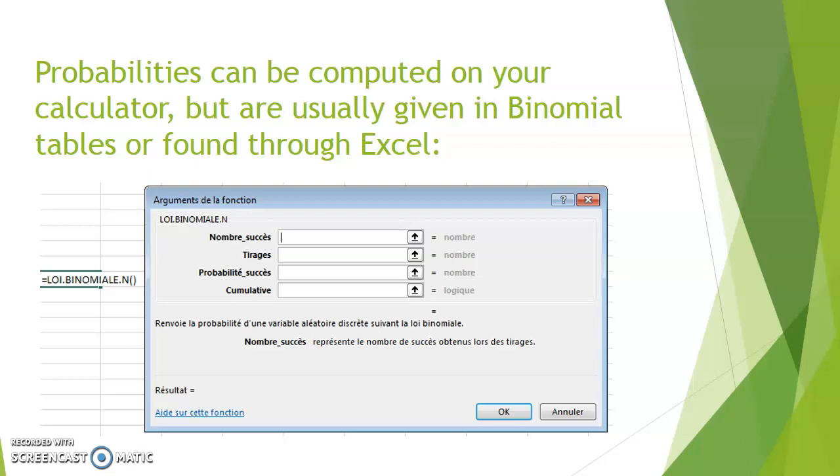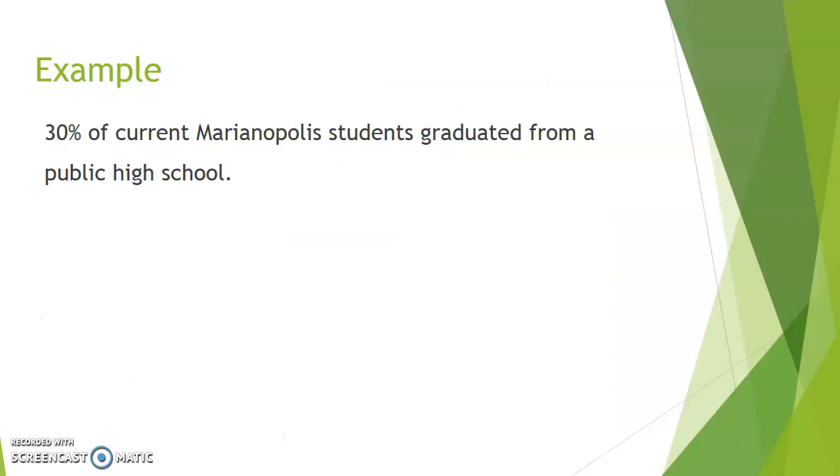Of course, it's much quicker to calculate the probabilities if you are given a table, if you have your calculator, or even better if you can use Excel. In English versions of Excel you will find a function called binomial dist or binom dist. Here's an example.